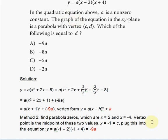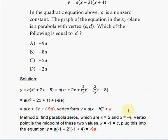We need the zeros because every parabola is symmetric with respect to a vertical line drawn through the vertex. The vertex is the midpoint between the zeros. Using the midpoint formula: (2 + (−4)) / 2 = −2 / 2 = −1.